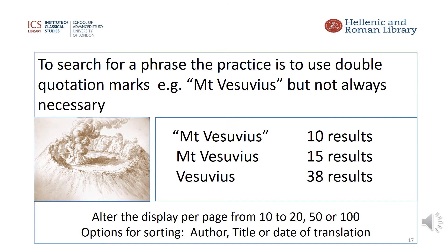The left hand side of the screen shows options for limiting the results to either Greek or Latin. In this case, clicking on Greek reduces the number of results to 10. Other options are to limit by poetry or prose, by time period, or by subject area. When you have a set of results, there is an option to sort them by author, by title, or by date of translation. To show the results, click on the link below the author which has the link 'Show Results Within'.